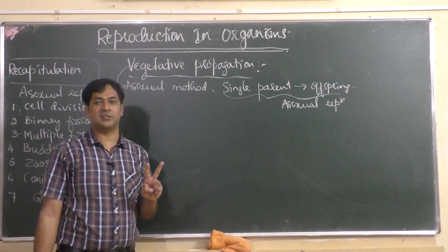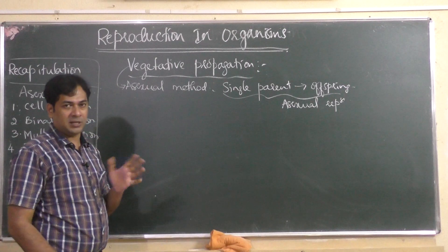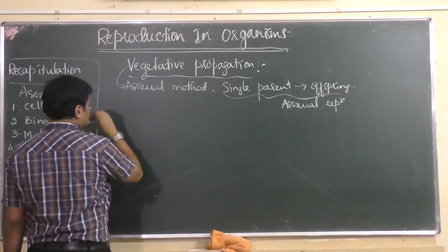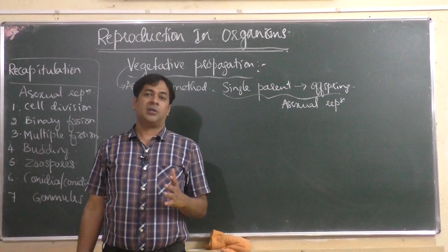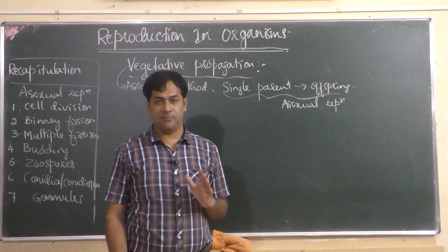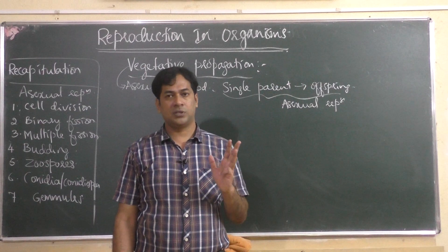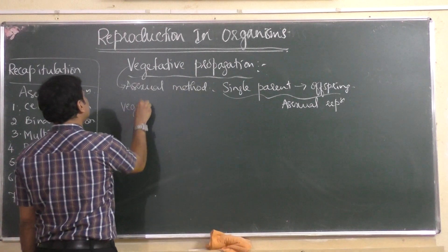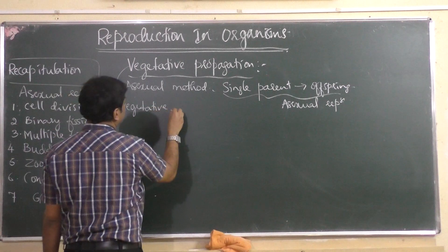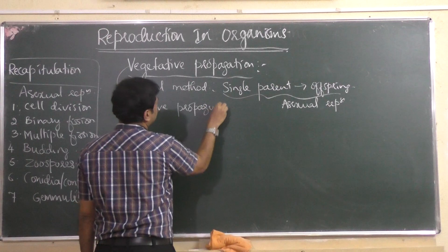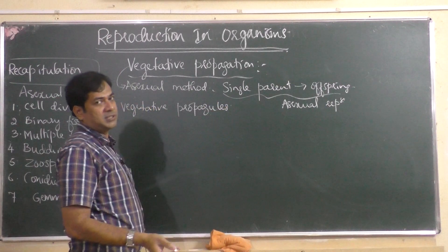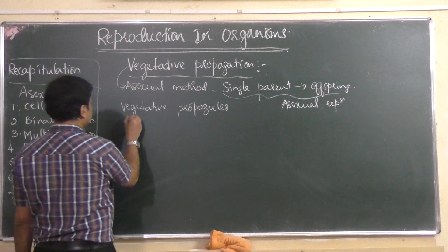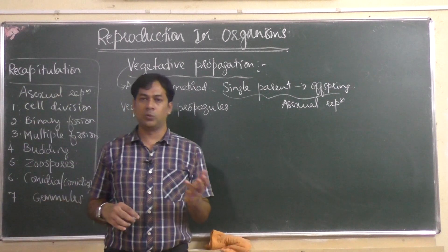If two parents of opposite sex are involved, it is sexual reproduction. In vegetative propagation, it is either male or female — just one. We have learned that whichever part of the plant, except the flower — because the flower is the sexually reproductive part — if root, stem, or leaves produce a new plant, then they are called vegetative propagules.